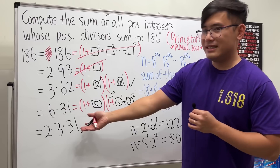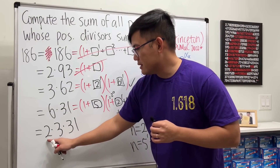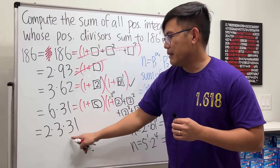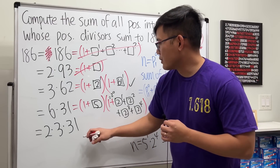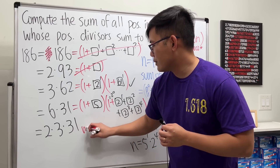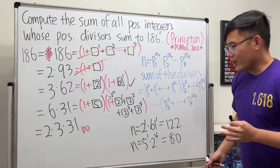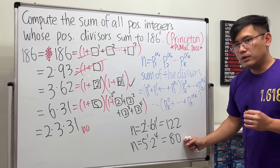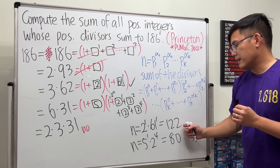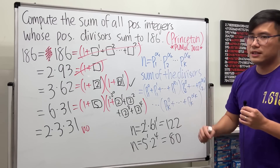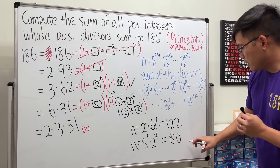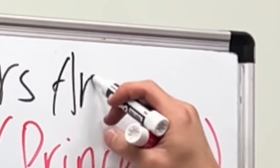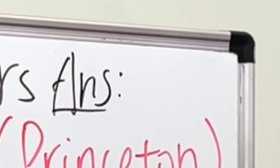For the last case 1 × 186: we'd need 1 + 1 = 2, but that doesn't work. So the only two numbers whose sum of divisors equals 186 are 122 and 80. The answer is 80 + 122 = 202, and we are done.